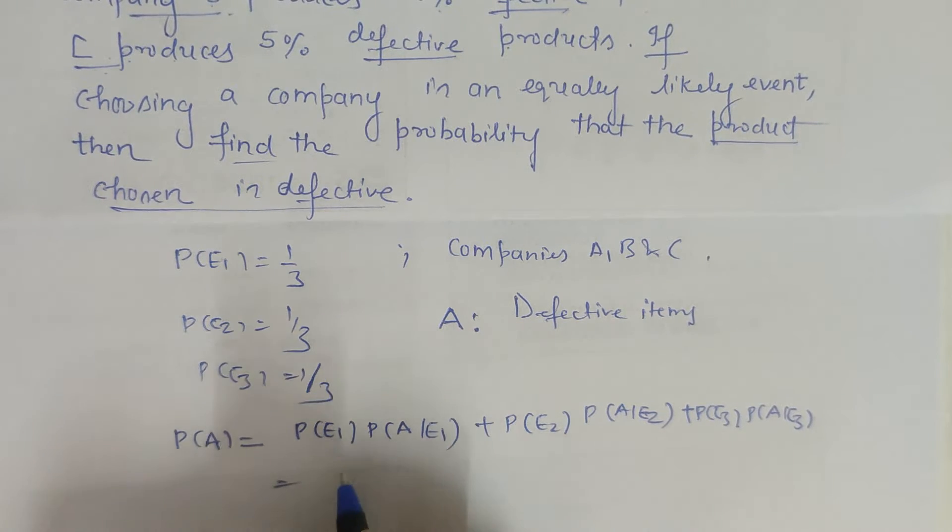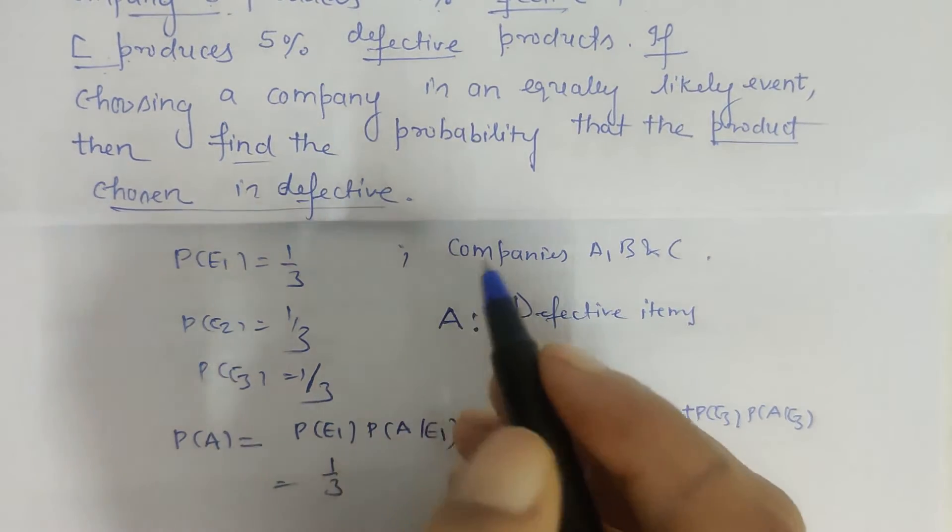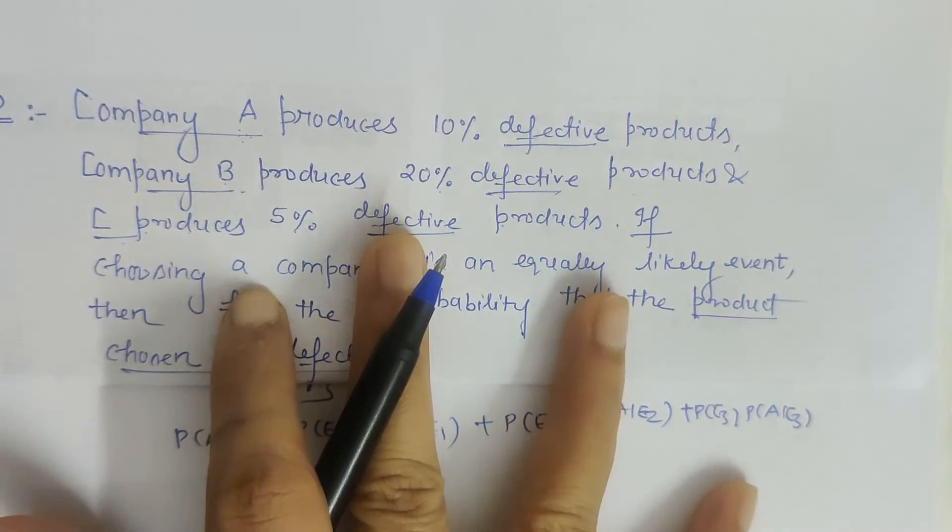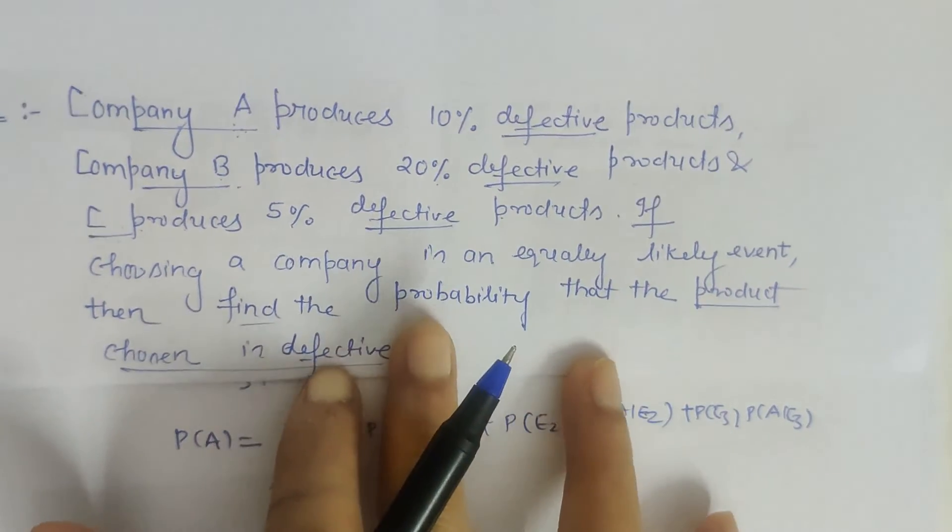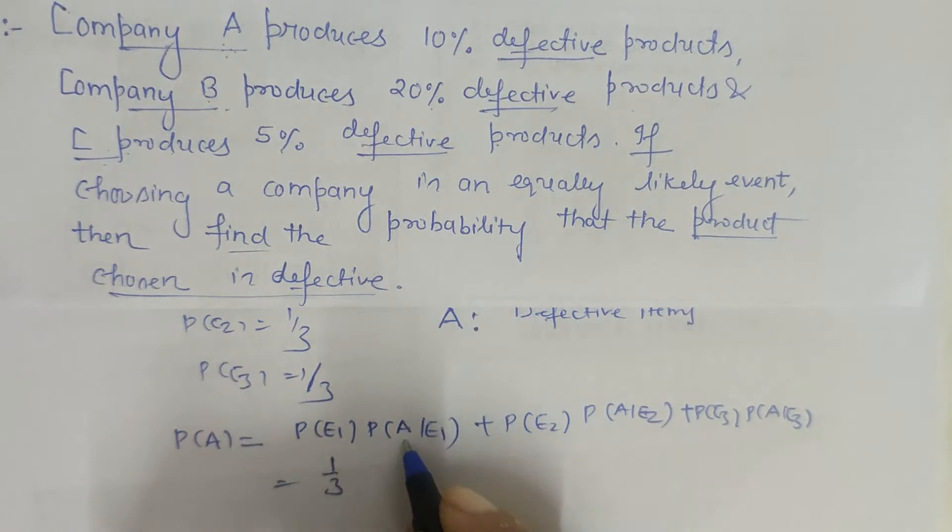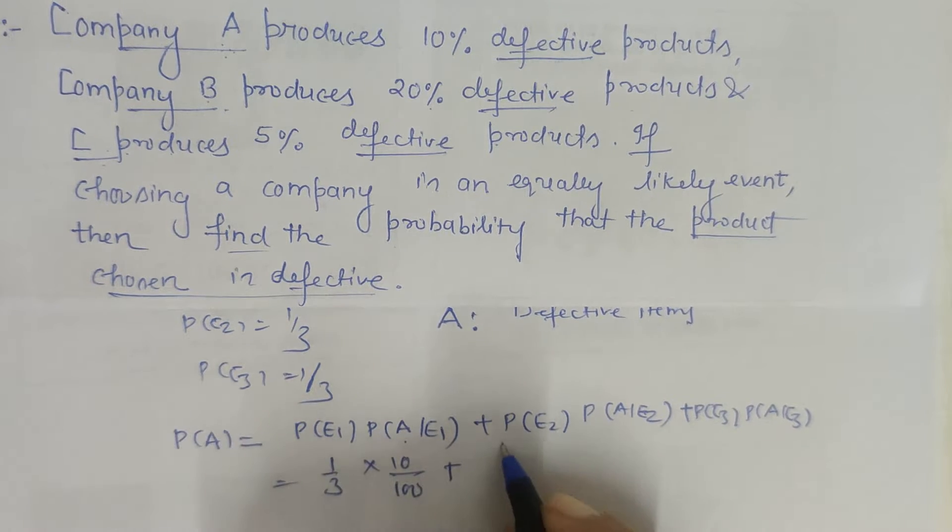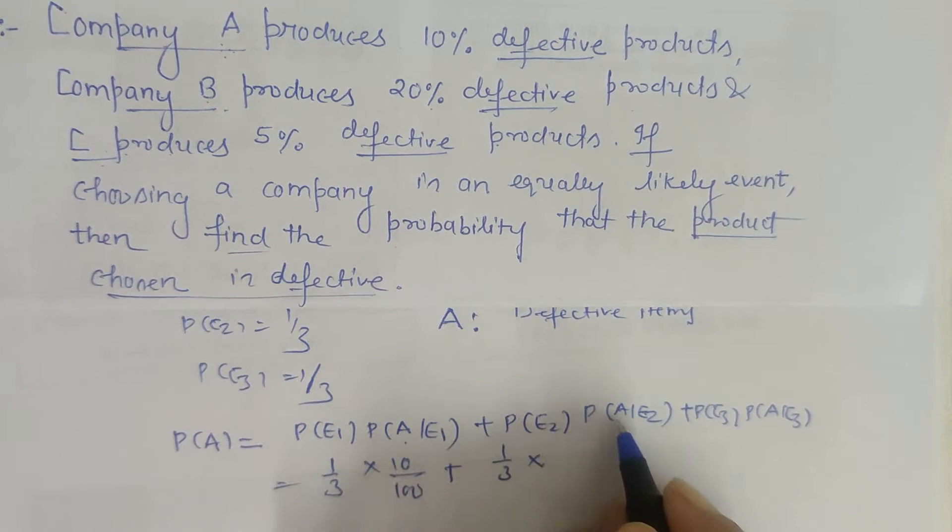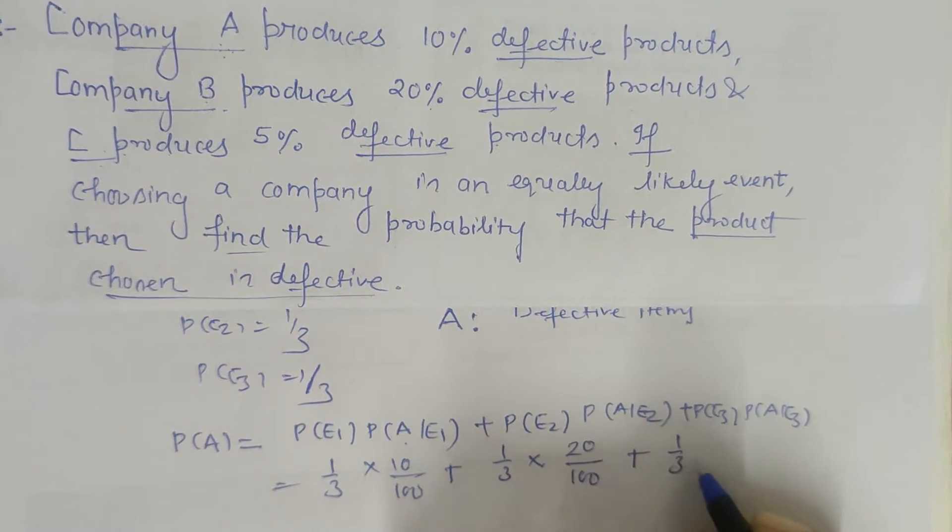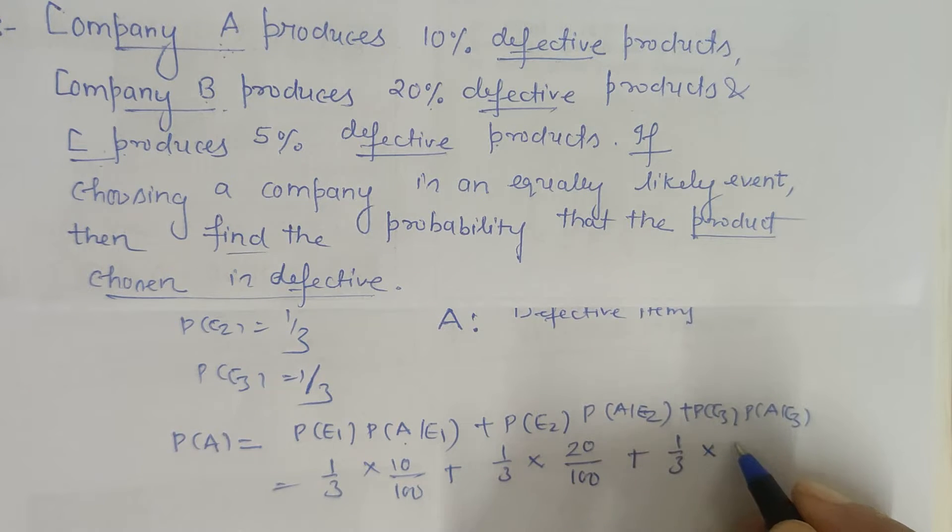Now simply substitute the values. Probability of E1 is 1 by 3, and A given E1 is 10% defective products, that means 10 upon 100. So probability of E1 times probability of A given E1 is 1 by 3 times 10 upon 100, plus probability of E2 is 1 by 3 times probability of A given E2 is 20 upon 100, plus probability of E3 is 1 by 3 times probability of A given E3 is 5 by 100.